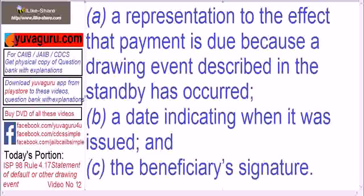For example, if the applicant was to provide 200 tons of cotton but has not provided it, then the beneficiary can write in that letter or certificate that '200 tons of cotton was not provided, hence the default has occurred, hence please pay.' Now there is a problem with this.